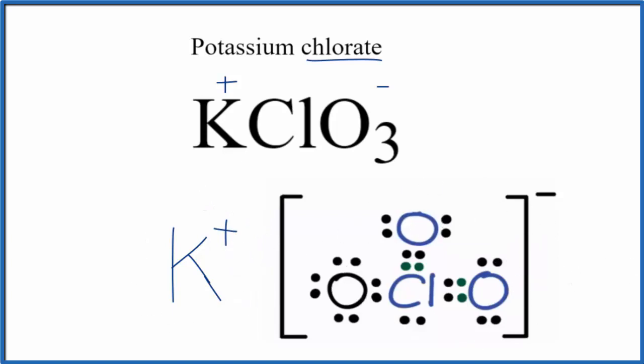The positive and the negative are attracted together, that makes KClO3. Overall, for KClO3, it's a neutral compound. It doesn't have a charge because the positive and the negative cancel out.